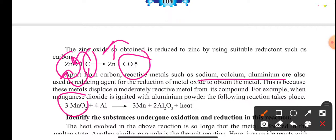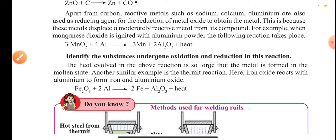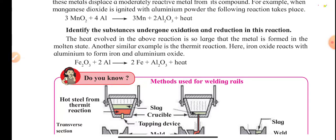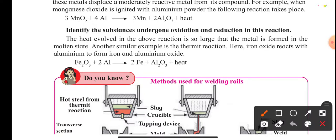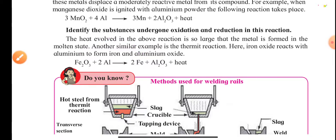The same principle applies with other examples. When magnesium oxide is reacted with aluminium, the aluminium displaces the magnesium, and we get manganese in pure form. Similarly, aluminium displaces iron in a simple displacement reaction, and we get iron in free state while aluminium forms aluminium oxide. This is called a displacement reaction.